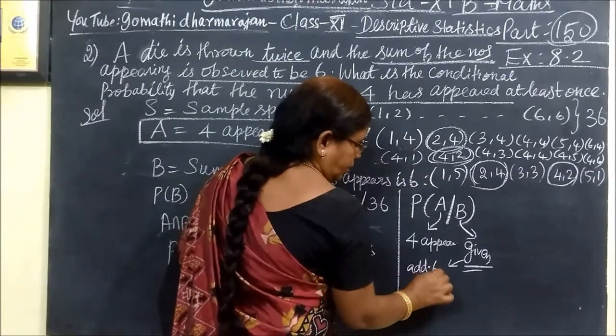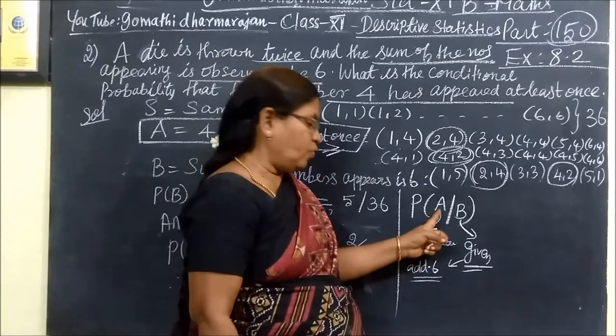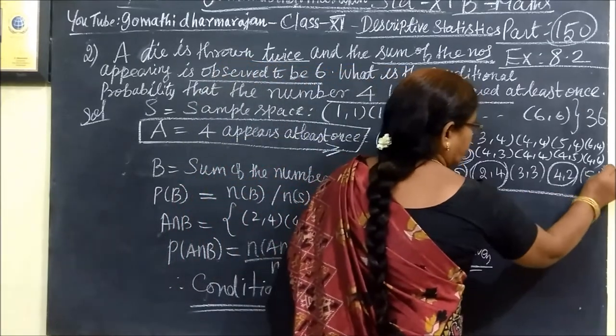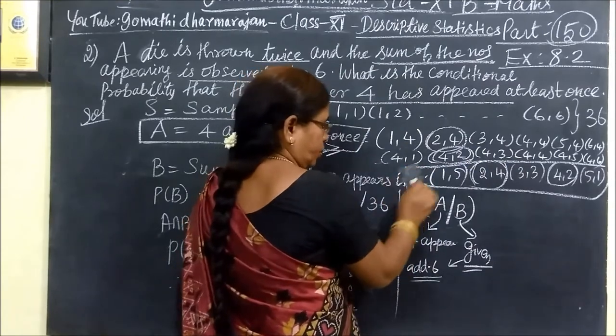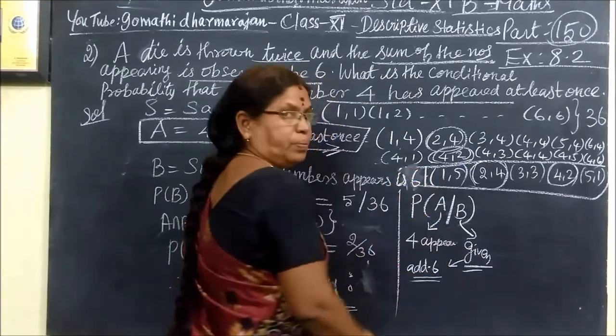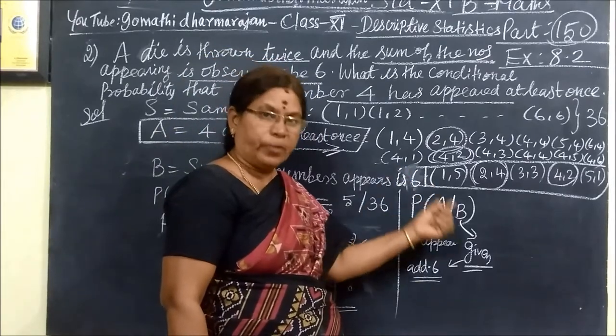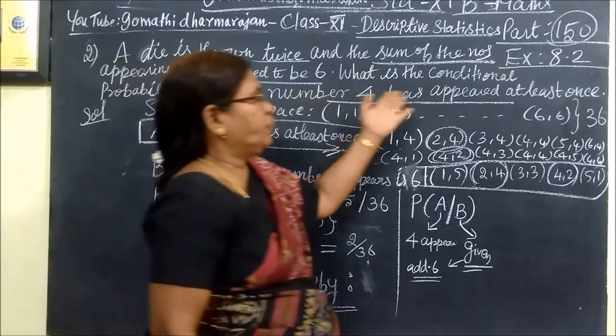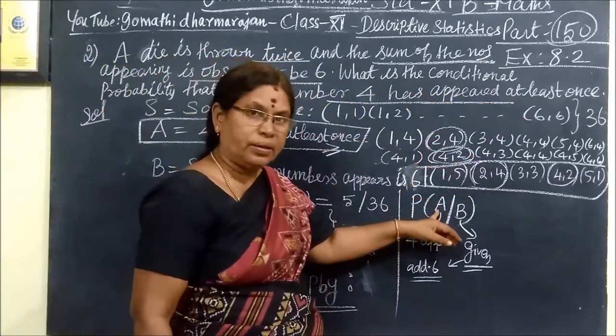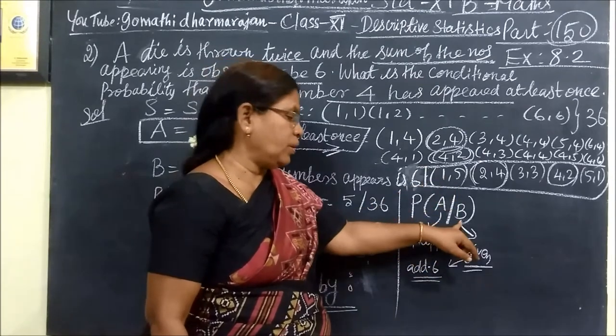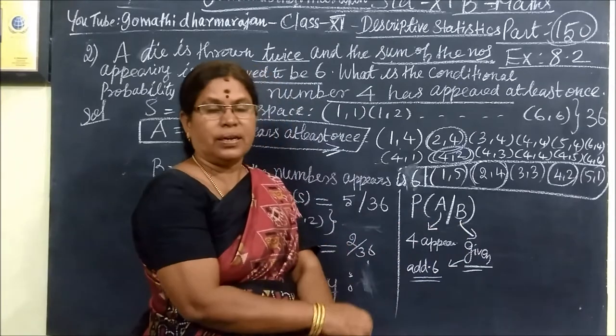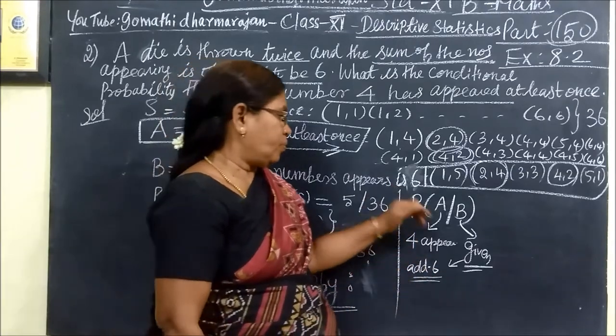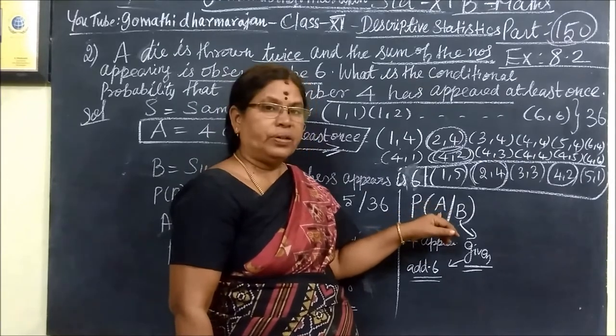In this variable condition, A means you are getting 6. In this variable condition, this is the condition of 4 appearing. What is the condition of 4 appearing? This is the condition of 5 or 5. This is the condition of 4 appearing. Probability of the event A from B. This is the condition of B. We will select what we want.